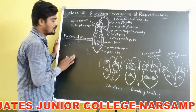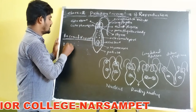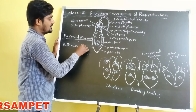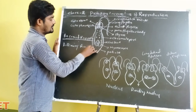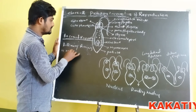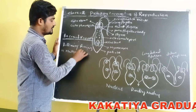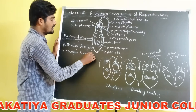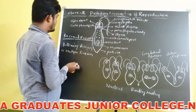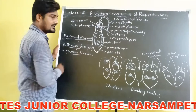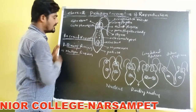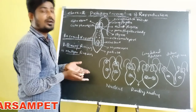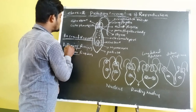Asexual reproduction is classified into two types. Number one is binary fission, and number two is multiple fission. Fission means dividing. Binary fission means the single parent body divides into two individuals.